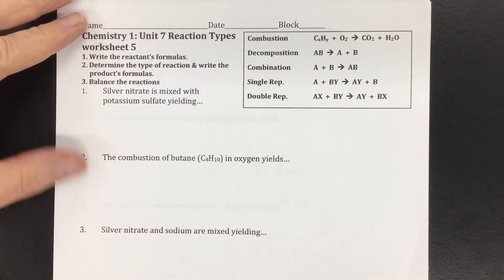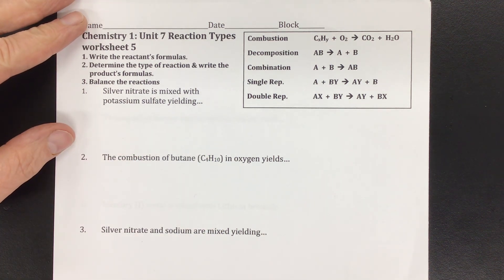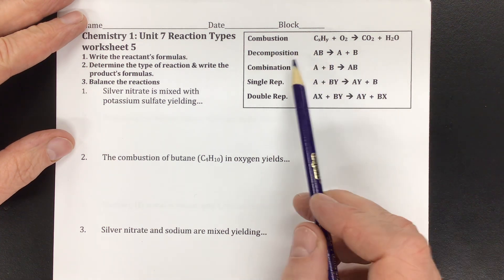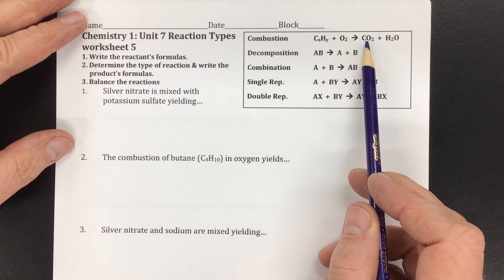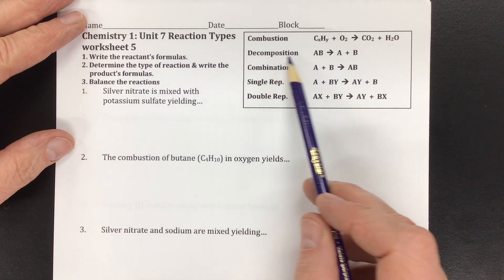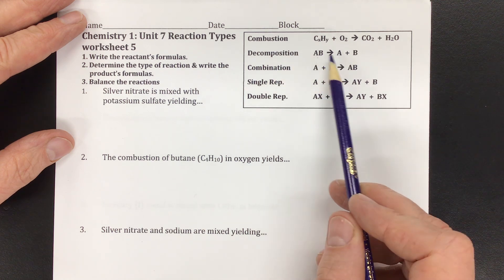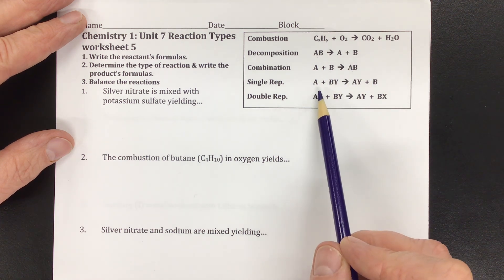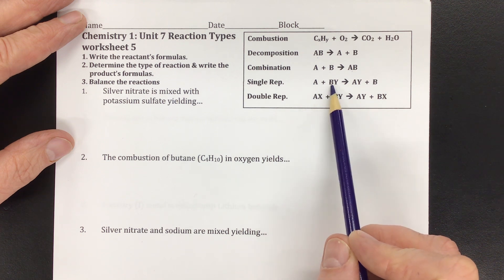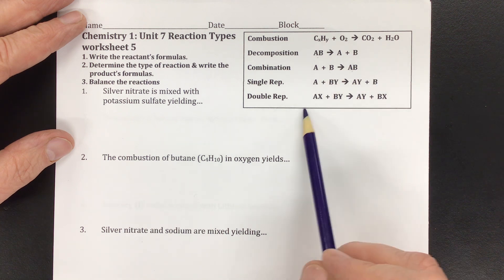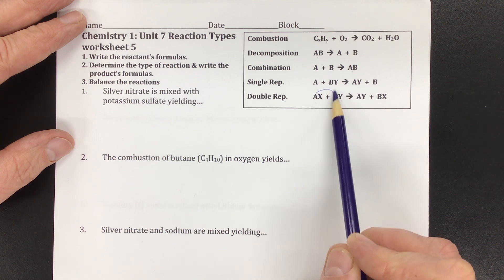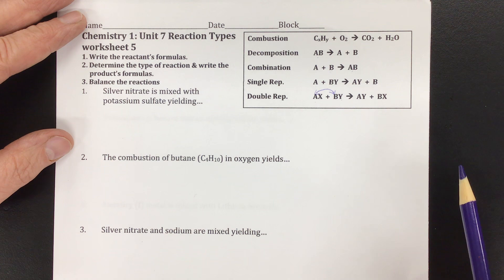Like number one, silver nitrate is mixed with potassium sulfate. We've got the five reaction types: combustion, which is a carbon-hydrogen fuel plus oxygen that produces CO2 and water; decomposition, which is one compound that becomes two elements; combination, which is the opposite — two elements become a compound; single replacement, where one thing is being replaced in an ionic compound; and double replacement, where two ionic compounds are trading places — both of their metals are basically trading places.